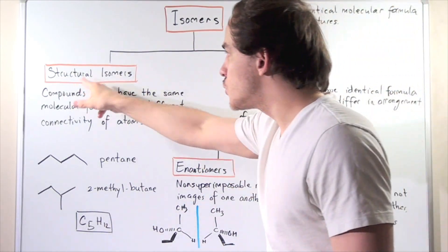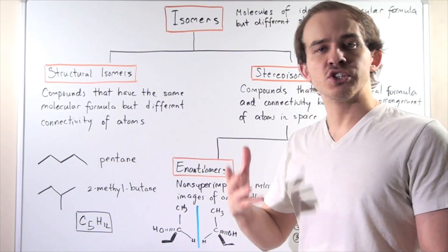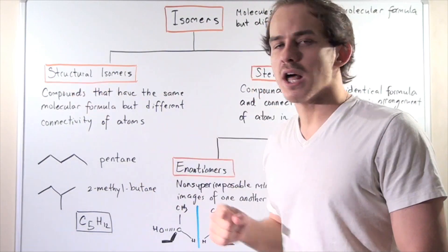Isomers can be subdivided into two categories: structural isomers, also known as constitutional isomers, and stereoisomers. Let's begin by looking at structural isomers.